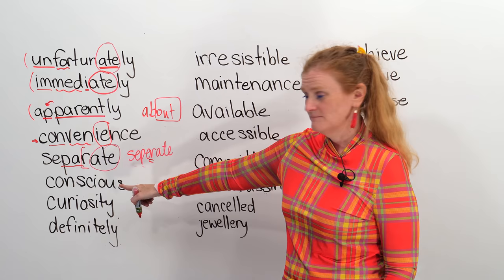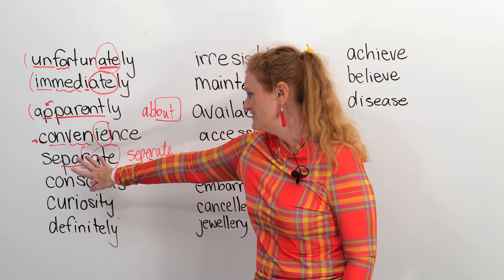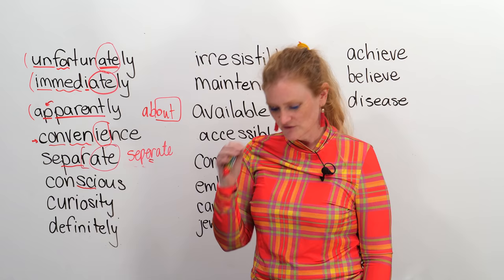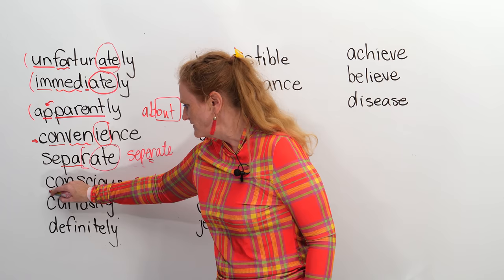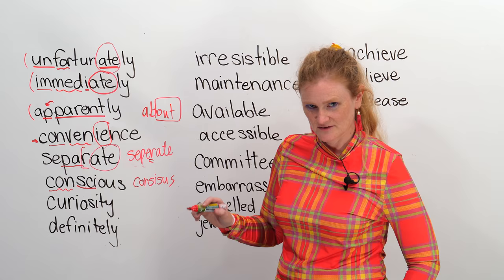This word has so many vowels, and there's C's and S's. I remember this like 'science.' So I go: conscious. That's how you should spell it — conscious. And then there's a C. I remember the beginning: 'con,' then 'science,' then 'us.' Con-science-us. Conscious.